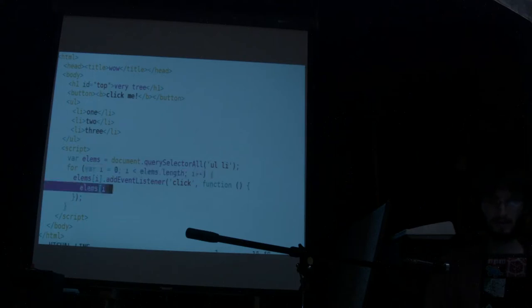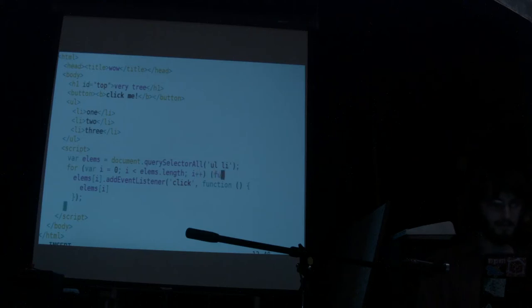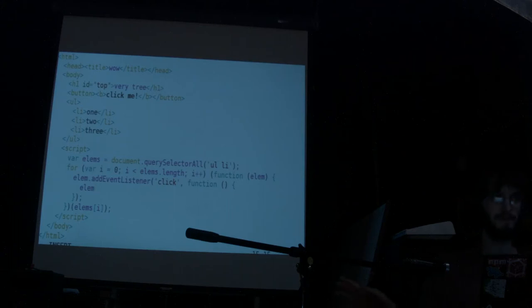By the time anyone can click the button, i is going to be the last element — always. So instead, what you have to do is use closures. We can make a little inline expression where we'll have the element reference. If you do that, now you can refer to 'elm', and elm is going to be consistent because it creates a new scope on the fly.